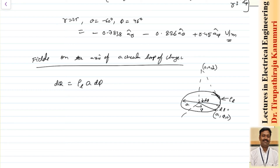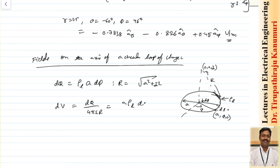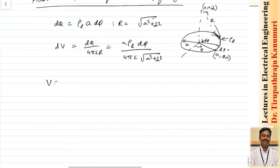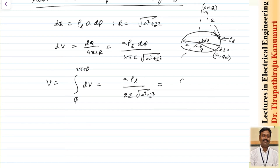The differential potential is dV = dQ / (4πε R) = A ρ_L dφ / (4πε √(A² + z²)). Integrating from φ to 2π + φ to cover the complete circular loop, the total potential becomes V = A ρ_L / (2ε √(A² + z²)), which also equals Q / (4πε √(A² + z²)).